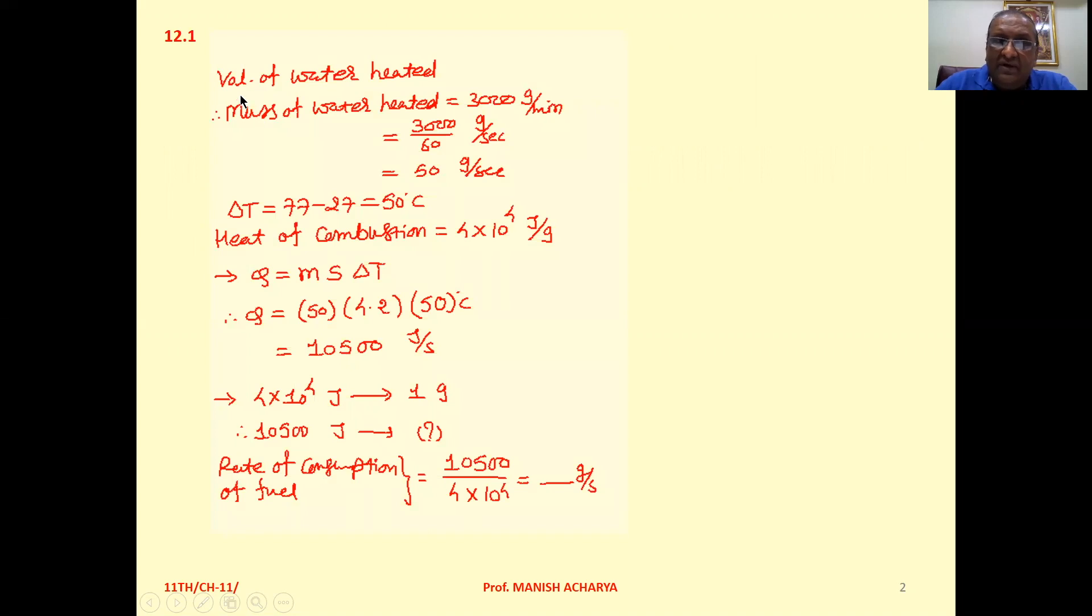First of all, volume of water heated that is given to you 3 litres. It implies that we can write the mass of the water heated that is 3000 grams per minute. So 3000 divided by 60, this much gram per second. So mass of the water heated that is 50 grams per second.